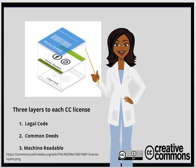The top layer is for machines to read, putting the license into the language for websites and web services to recognize and help with searches, such as a Google search. This is for users to find the types of creations they're able to use and/or adapt to possibly reuse.